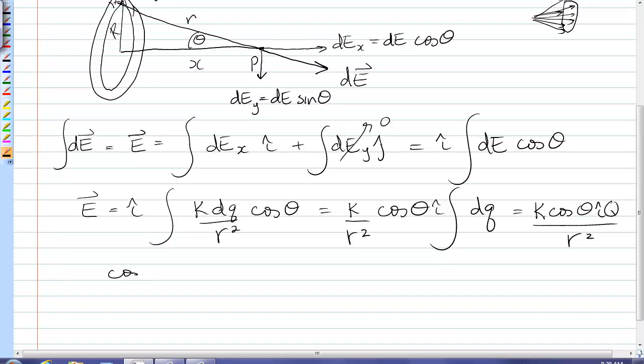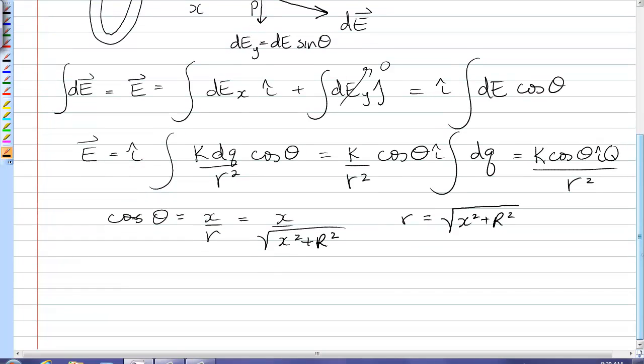So I can see from the geometry that cos theta is equal to x over r, and r is the square root of x squared plus R squared. Similarly, I need to get rid of r, which is also in the expression.